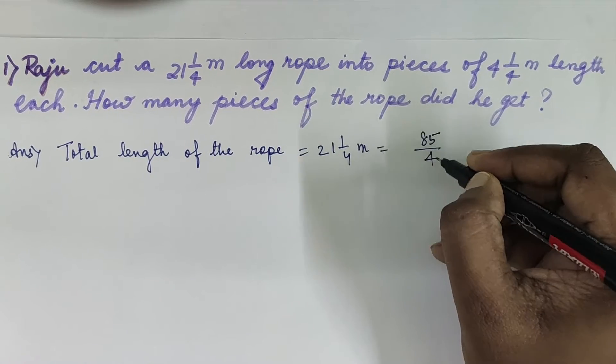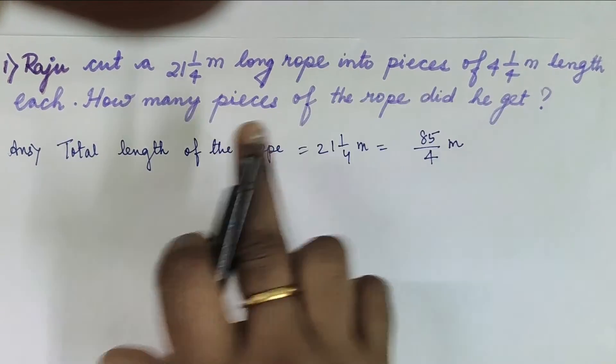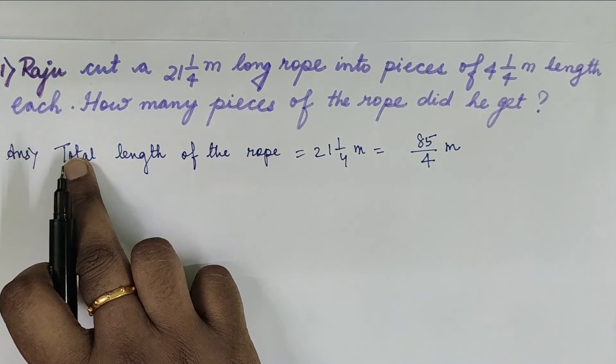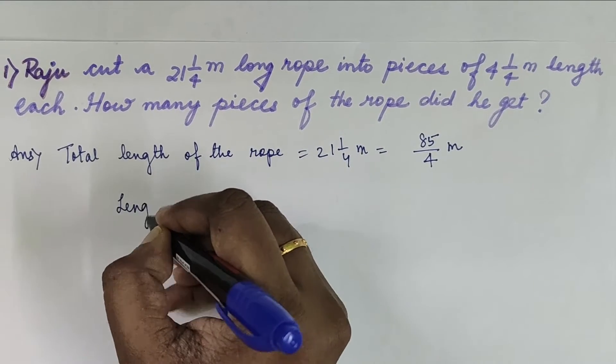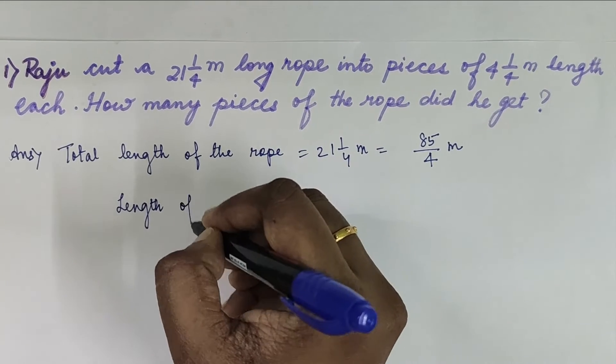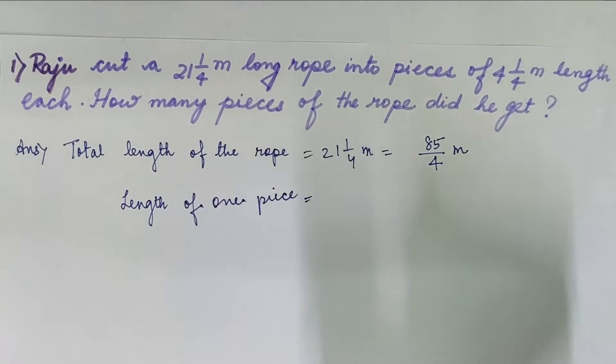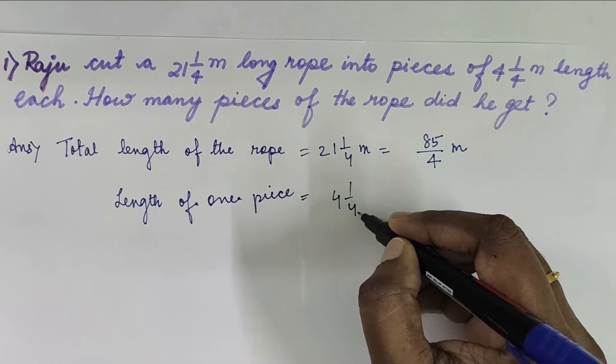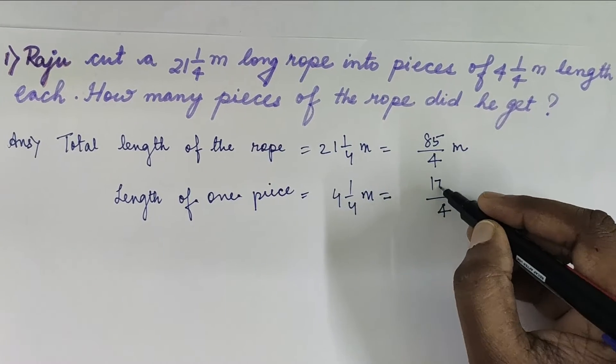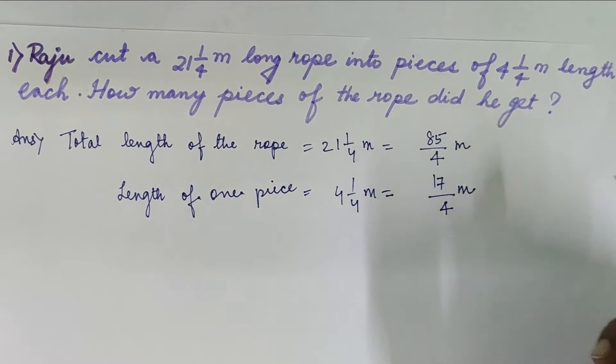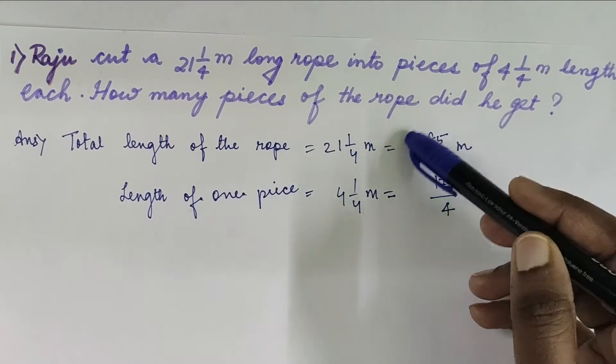Now length of each piece that he cuts is given as 4 1/4. So length of one piece is given as 4 1/4 meter which is equal to 16 plus 1, 17/4 meter.